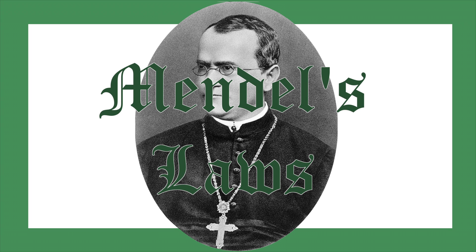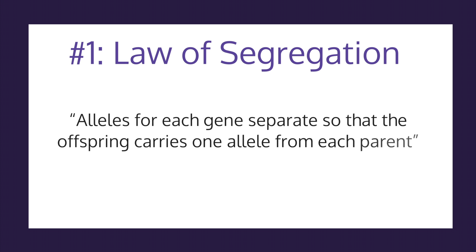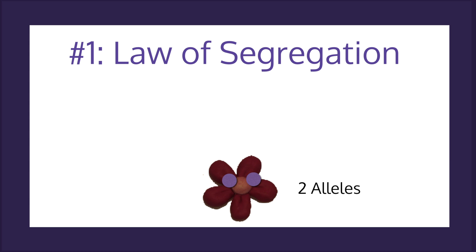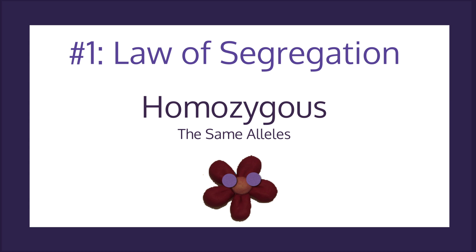Based on his findings, Mendel was able to determine three different laws. Mendel's first law is the Law of Segregation. It states that alleles for each gene separate so that the offspring carries one allele from each parent. For each trait that an organism inherits, they get two alleles, one from each parent. These two alleles might end up being the same. For example, if we bred two of the purebred purple peas, each pea parent would give off one of its pure purple alleles, and the pea baby would get two identical purple alleles. When the alleles are the same, it is known as homozygous.